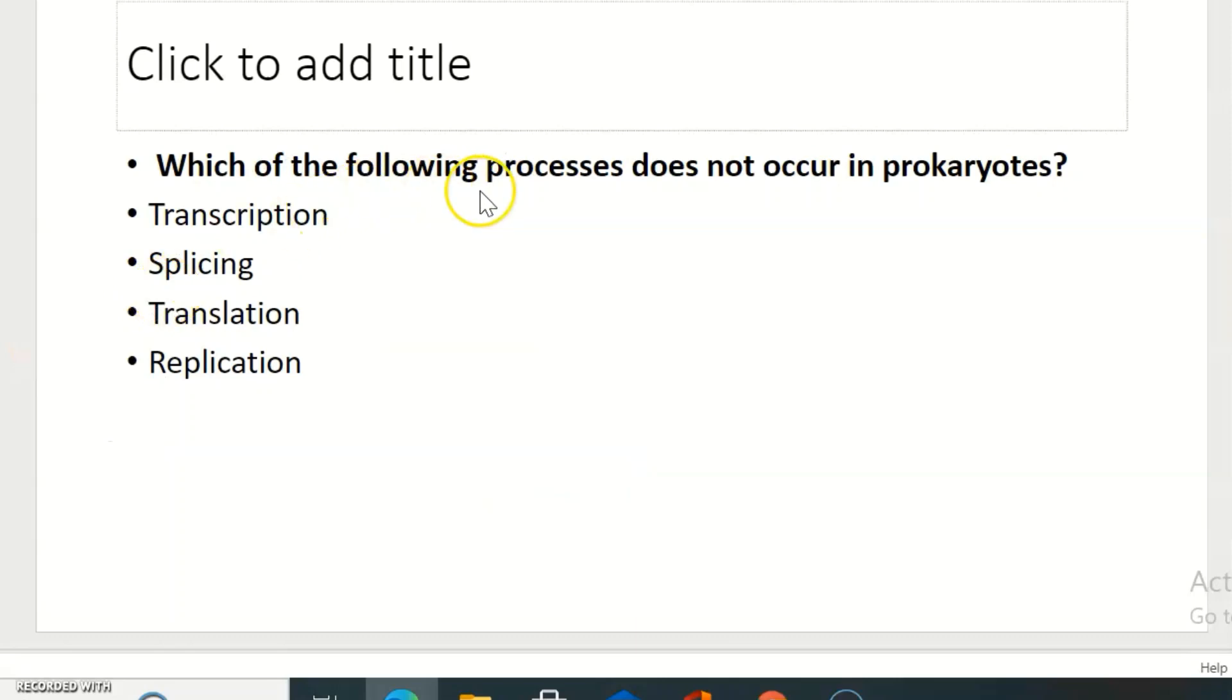Which of the following processes does not occur in prokaryotes? Transcription, splicing, translation and replication. You all know replication, transcription and translation occur in prokaryotes and also in eukaryotes. But splicing only occurs in eukaryotes, does not occur in prokaryotes.